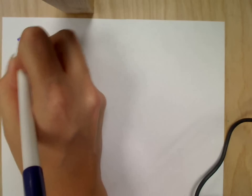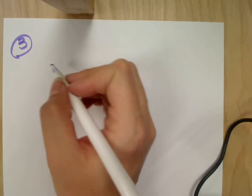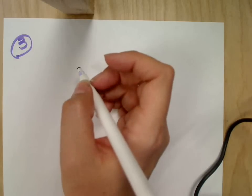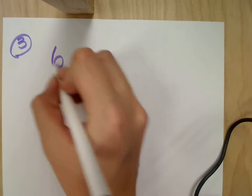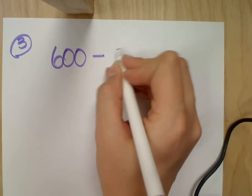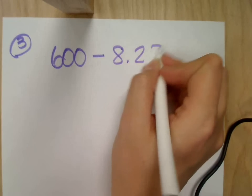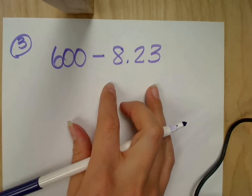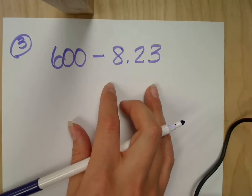Okay, number three on the comp test is testing to see can you subtract a whole number and a decimal. And it's written like this for a reason. It's not set up for you because part of that test for you is can you figure out how you need to line them up. And I just gave you a hint.